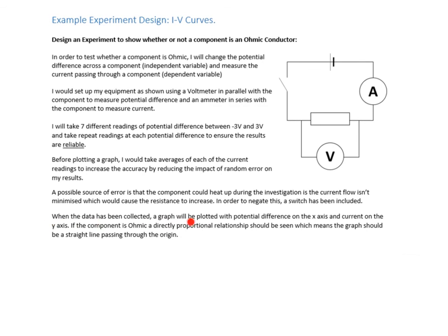For the last part, we're talking about the graph we're going to plot — being specific about what's on each axis. What we'd be looking for if it is an ohmic conductor is a directly proportional relationship, meaning the graph should be a straight line passing through the origin. Both of those criteria are required to confirm a directly proportional relationship and identify it as an ohmic conductor. That's a pretty concrete design for carrying out this experiment, and from it you would be able to carry out the investigation.